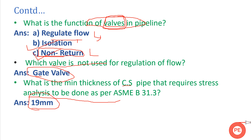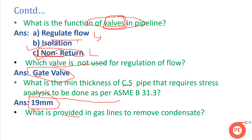What is provided in a gas line to remove condensate? This is a common question in petrochemical or steel industry interviews. Gas condensate is removed with the help of a drip pot. The condensate must be removed because if moisture enters the equipment it may damage it. Condensate is therefore removed at regular intervals, which are finalized during the pipeline design stage.